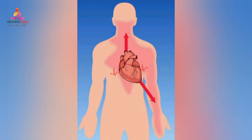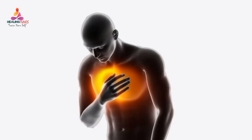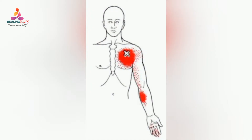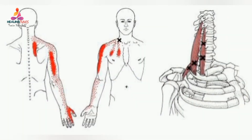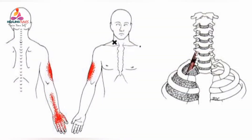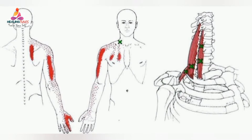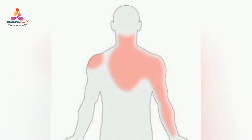Angina is discomfort or pain in the chest due to an insufficient amount of oxygen-rich blood getting to the heart. Chest pain due to angina can radiate to the shoulders, arms, neck, or jaw. These pain receptors ultimately are referred to afferent pathways which are carried in multiple nerve roots from C7 to T4.